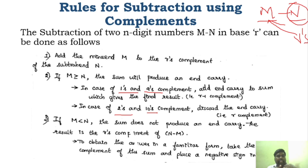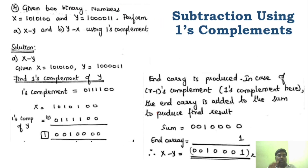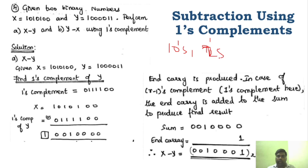If you don't understand the rules, go back and watch the subtraction using one's complement prerequisite videos. One's complement is very, very easy. You have to understand one particular logic: this applies to 10's complement and 9's complement — sorry, 1's complement and 2's complement. If you have to determine r's complement where r is 10, and r is 2, then you have to determine r minus 1.